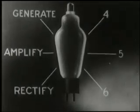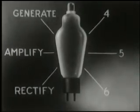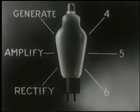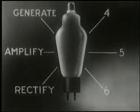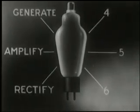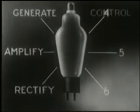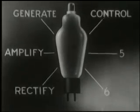We've now illustrated three of the basic ways that the electronic tube can be put to work: it rectifies, it amplifies, it generates. And here's a fourth thing it does — it controls.